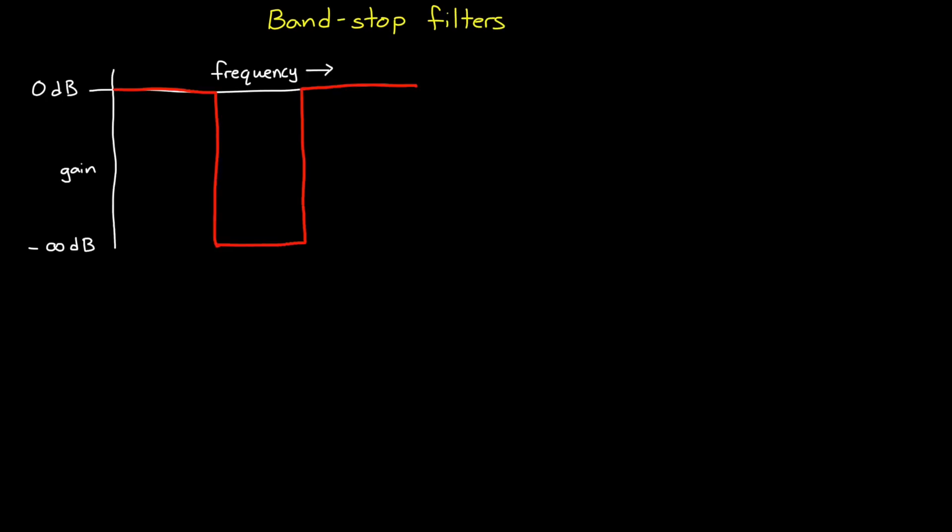Bandstop filters attenuate or mostly remove a block of frequencies from a signal and pass through the other frequencies nearly unaltered. These regions are called the stop band and the pass bands. You may also hear these filters called band reject filters, but I'm going to stay with bandstop because I like that term a little better.